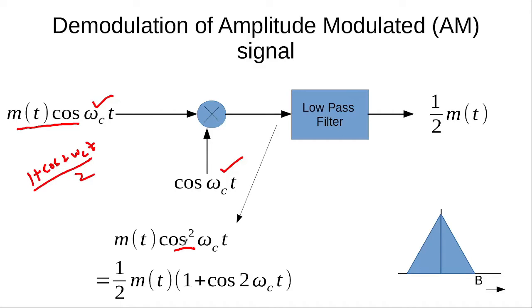When we multiply (1 + cos2ωct) / 2 with m(t), we get this signal. This signal is then passed through a low pass filter, and as a result, the cos(2ωct) component, which is a high frequency component, is eliminated. We get m(t)/2, which is the actual signal, located at the 0 Hz frequency.